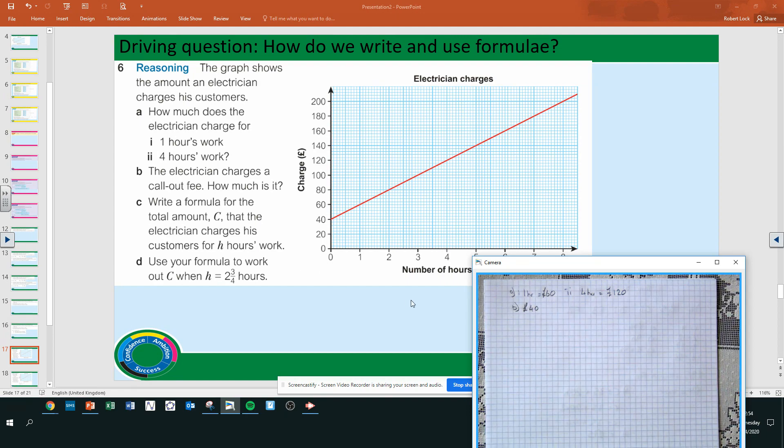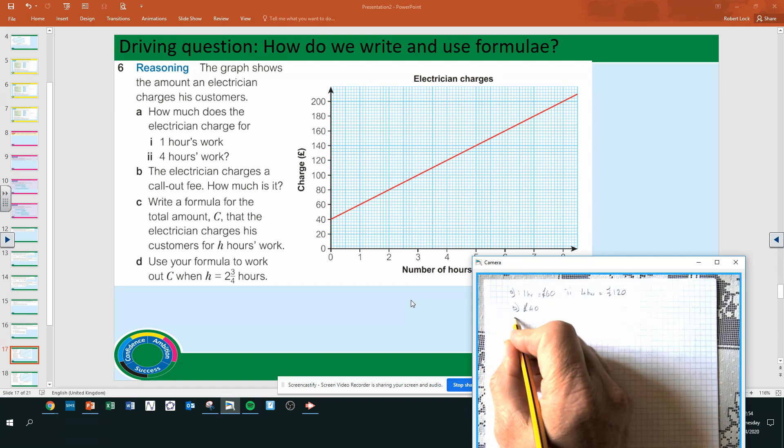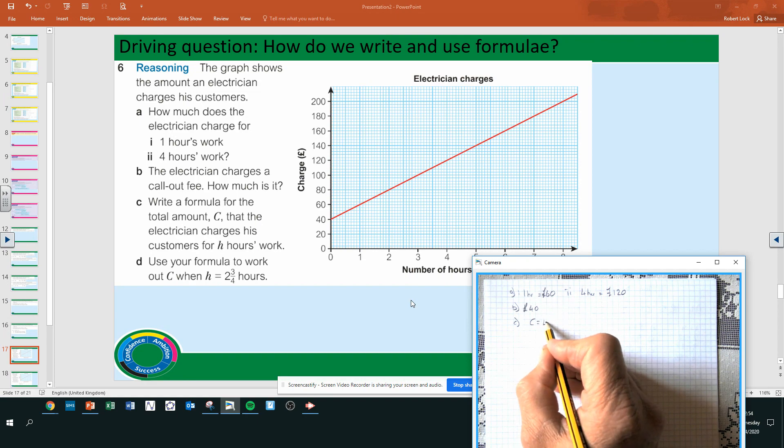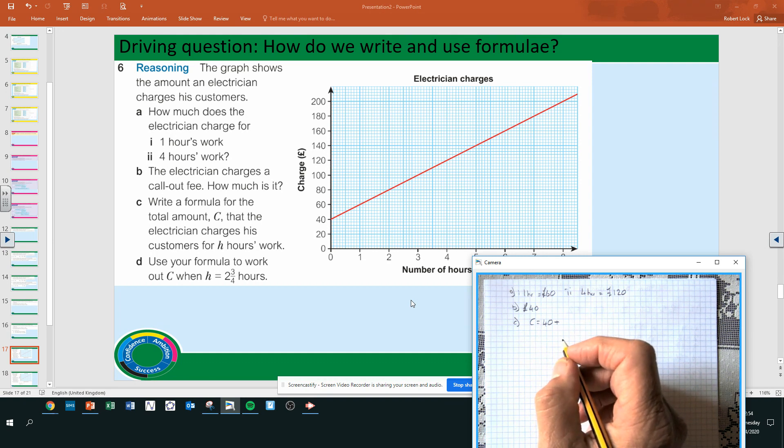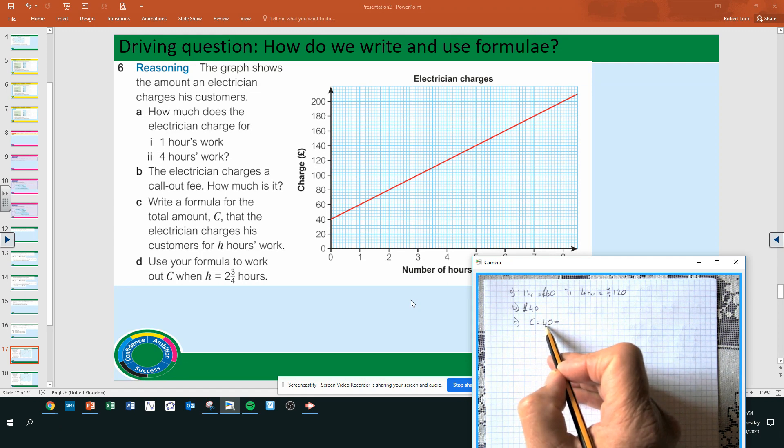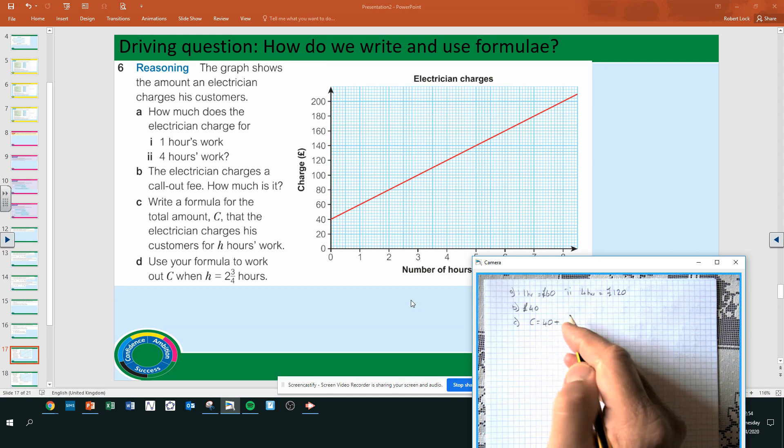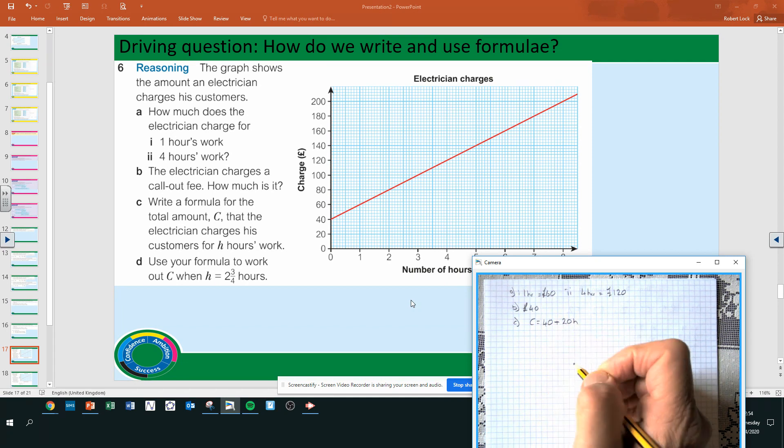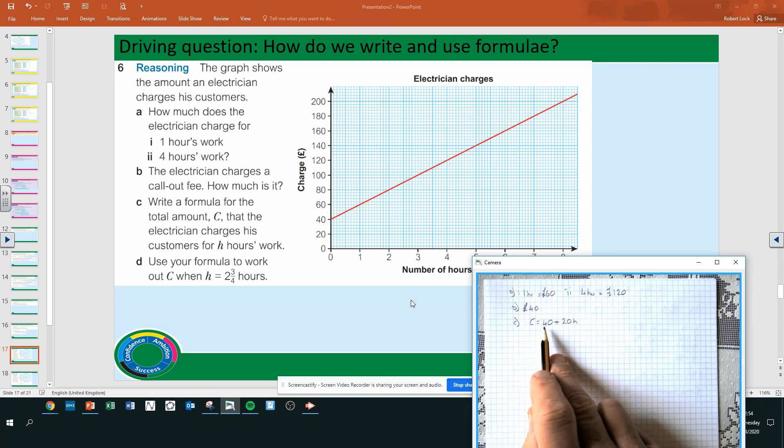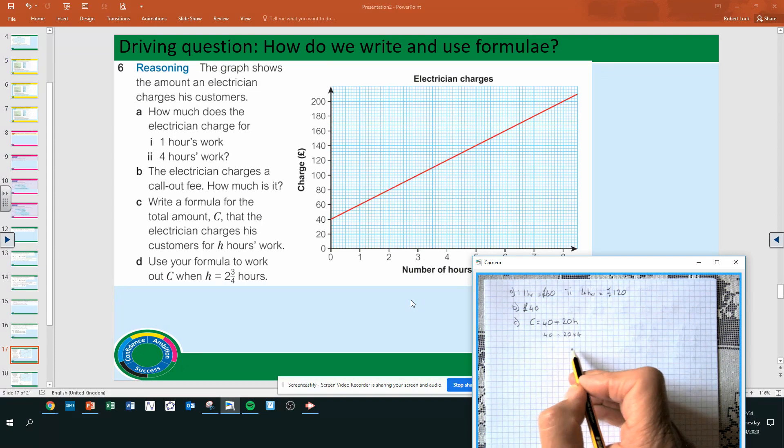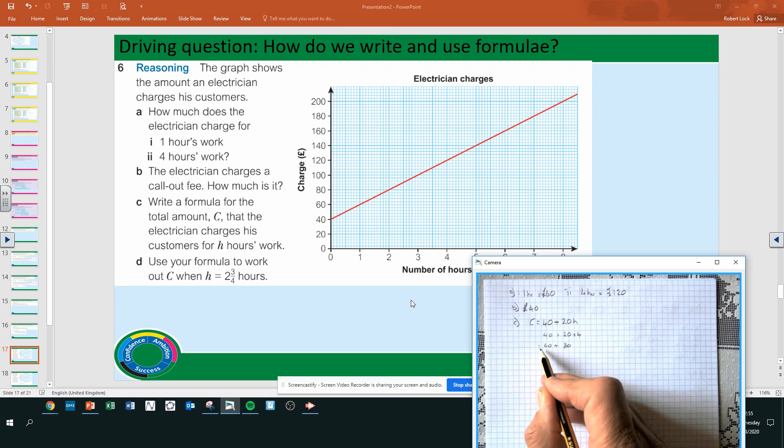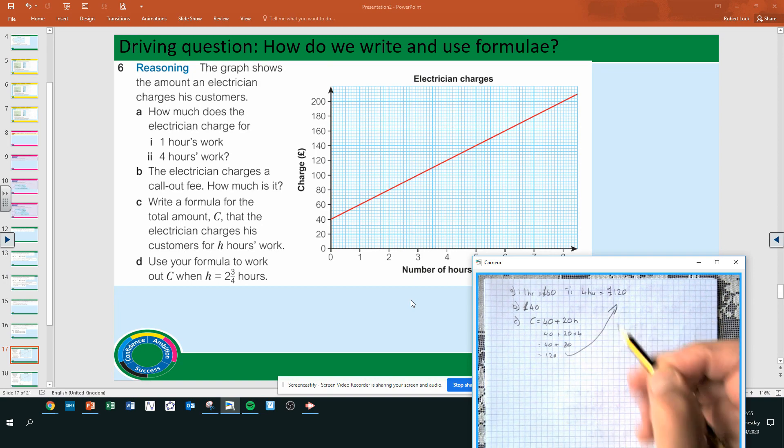C, write a formula for the total amount C that the electrician charges his customers for each hour's work. His charge equals £40 straight away for the call-out. £40 plus hours of work. How much does he charge per hour? Well, it calls out £40. After one hour, it's £60. So 60 take away 40 is 20. So £20 times the number of hours. 4 hours, we'll quickly check. 40 plus 20 times 4. 20 times 4 is 80. That'd be 120, which is the same as there. So that is correct.